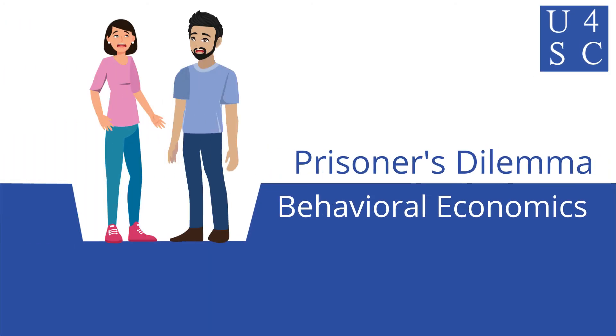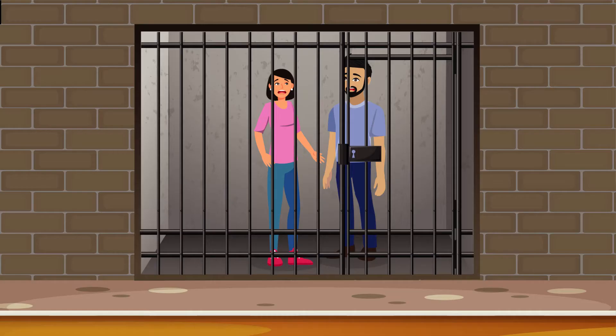Academy for Social Change presents Prisoner's Dilemma. Maggie and Lou are found at a crime scene. Given the physical evidence, they're each looking at about one year in prison.